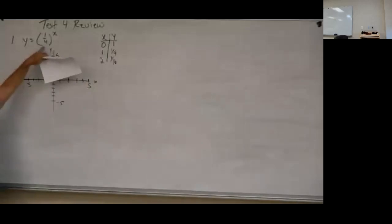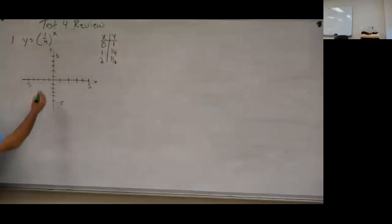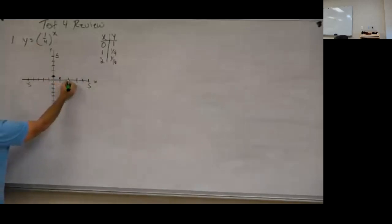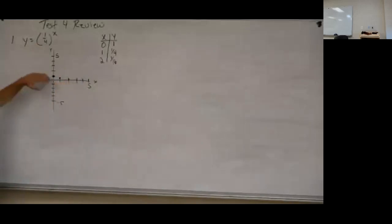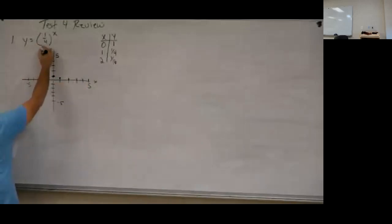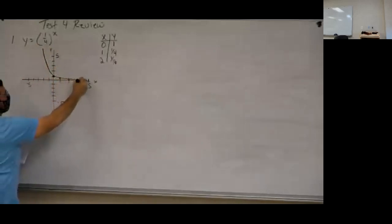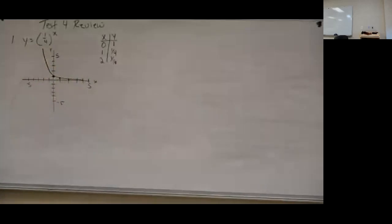All these exponential graphs go right to one because when X is zero, anything to the zero power equals one. So it crosses right at one. At X equals one, I'm at one-fourth. At X equals two, I'm at one-sixteenth — getting smaller and smaller. The graph comes down, crosses there, and hugs the X axis getting closer but never reaching it.